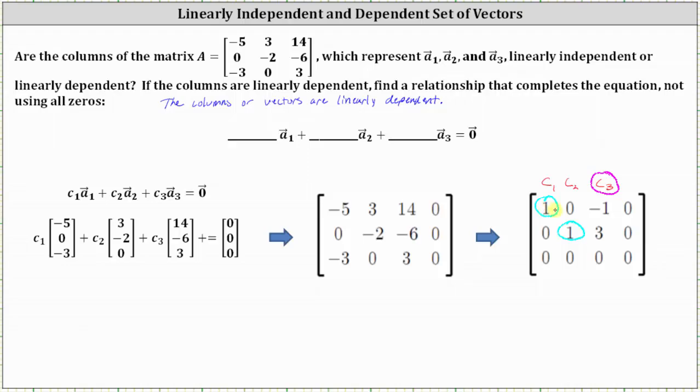So more specifically, the first row indicates that C sub one minus C sub three equals zero. The second row indicates that C sub two plus 3 C sub three equals zero.